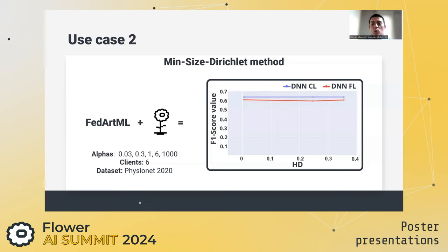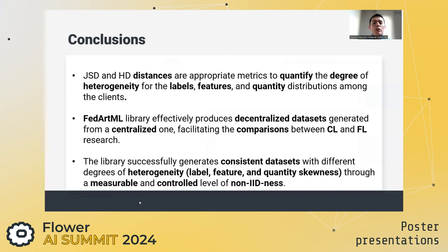Using FedRML and Flower, we split our FEMNIST dataset based on the quantity skew, determining that the federated and centralized models have very similar performance, even increasing the level of non-IIDness. We can conclude that the Jensen-Shannon and Hellinger distances are appropriate for quantifying the degree of non-IIDness of label, feature, and quantity distribution among clients.